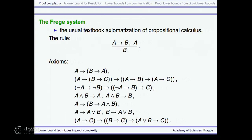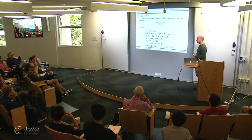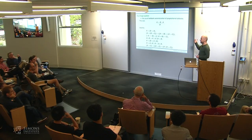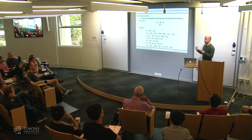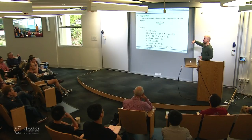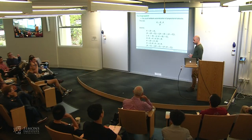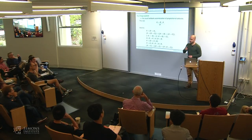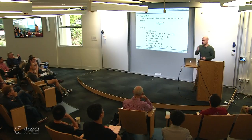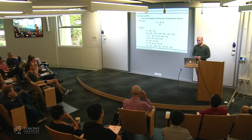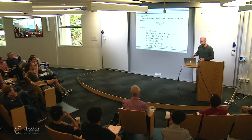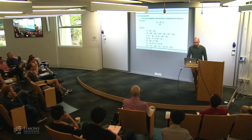Can I think of the axioms as any finite set? Yes, basically. There is a notion of a general class called Frege systems, which have a finite list of axioms and inference rules. You can show that in terms of lengths of proofs, all Frege systems are equivalent — if there is a short proof in one, there is a short proof in another.